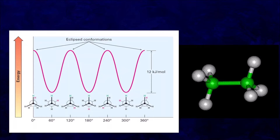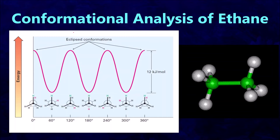Hello everyone, welcome to Chemazon Complete Chemistry. In today's video we are going to start with the conformational analysis of ethane. In further videos we will see propane and then butane. Ethane is a two-carbon alkane — CH3-CH3 — where green ones are carbon and white ones are hydrogen atoms.